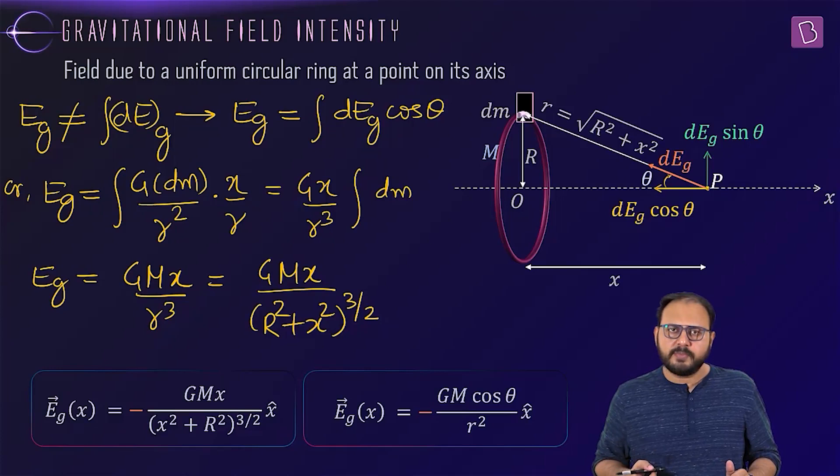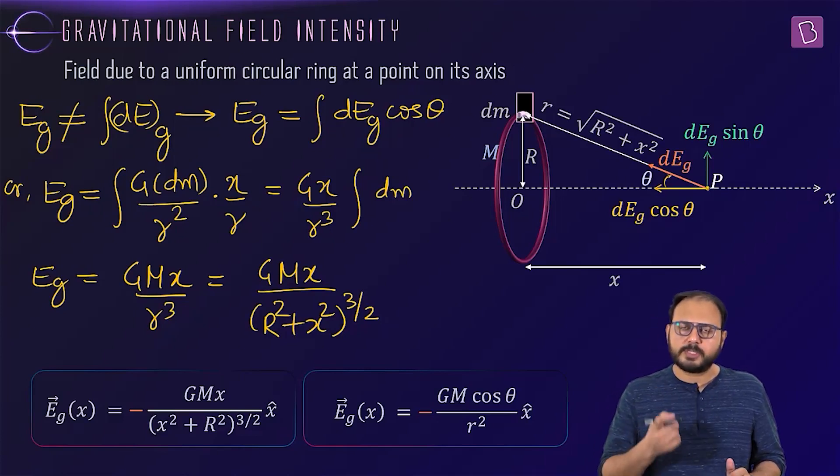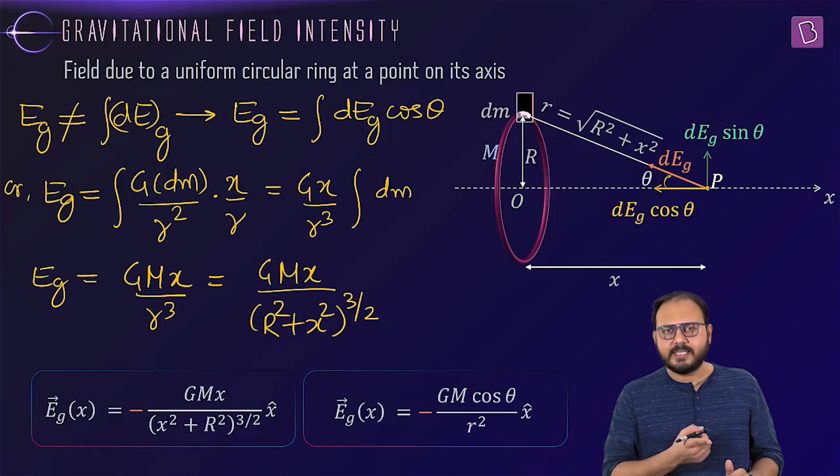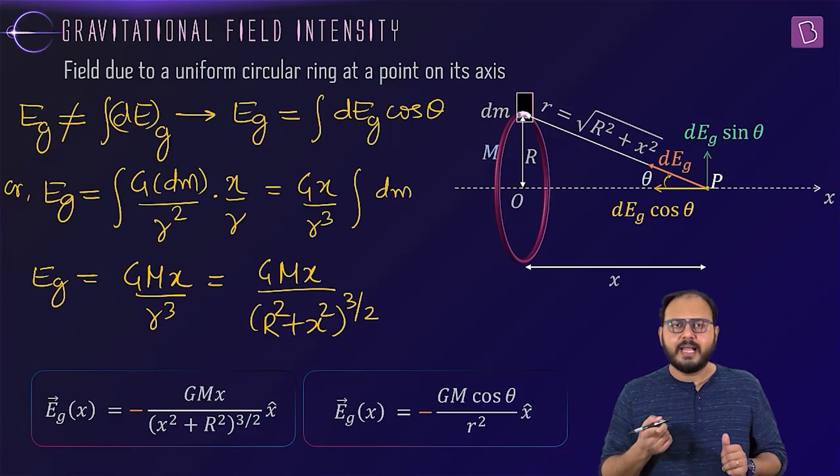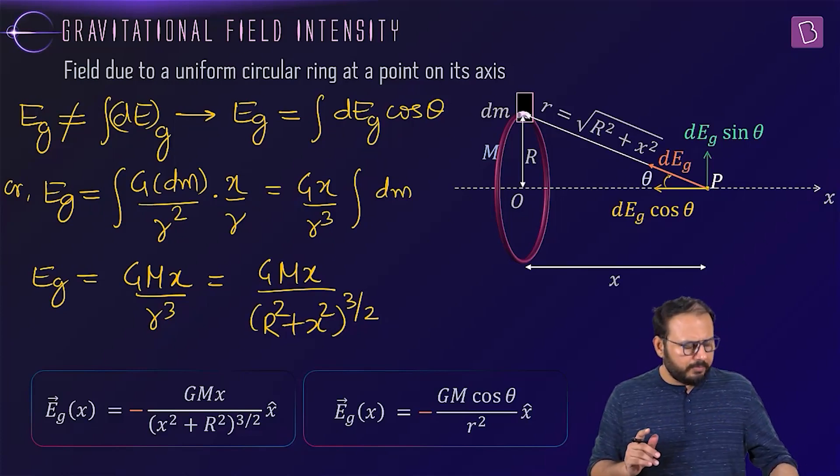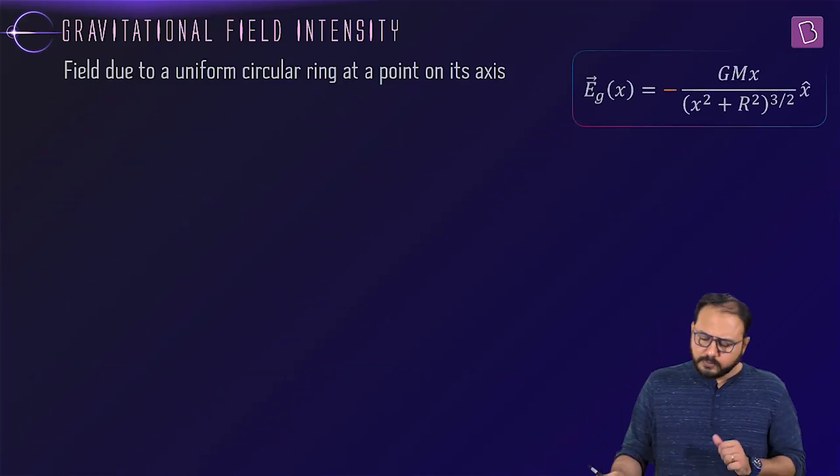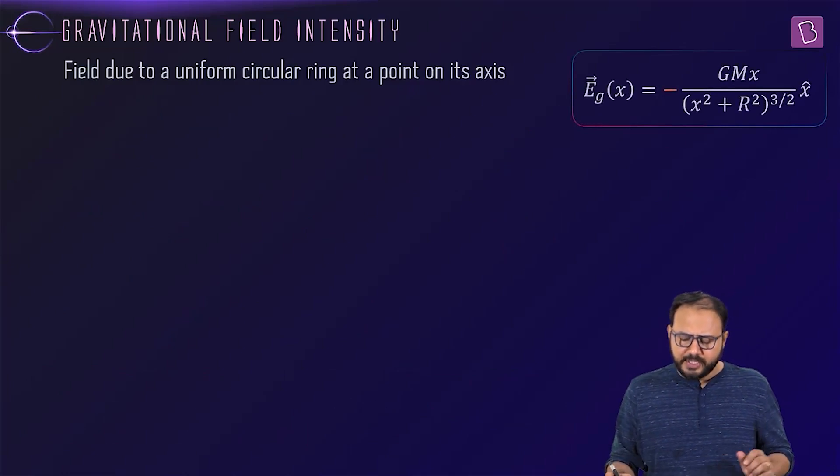What's the extra result I told you to remember? Minus gm cos theta by r square. Remember what small r is. Small r is that slant distance of any point of the ring from that point. Desired point. And what is theta? The angle that line makes with the axis. Did you also get the relevance of minus sign? Good for you. Good.